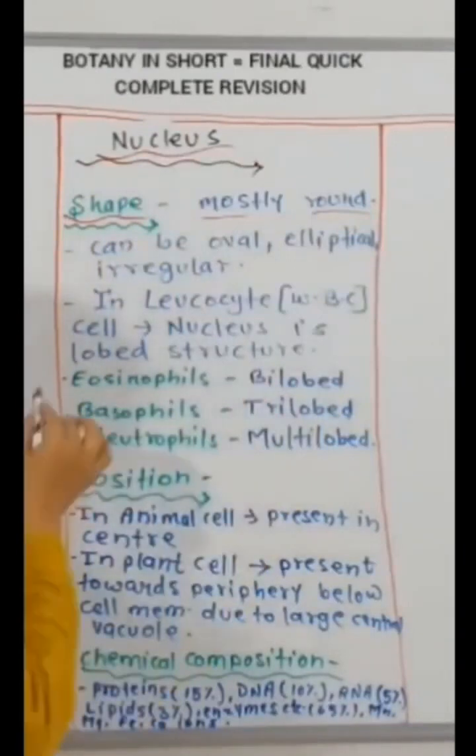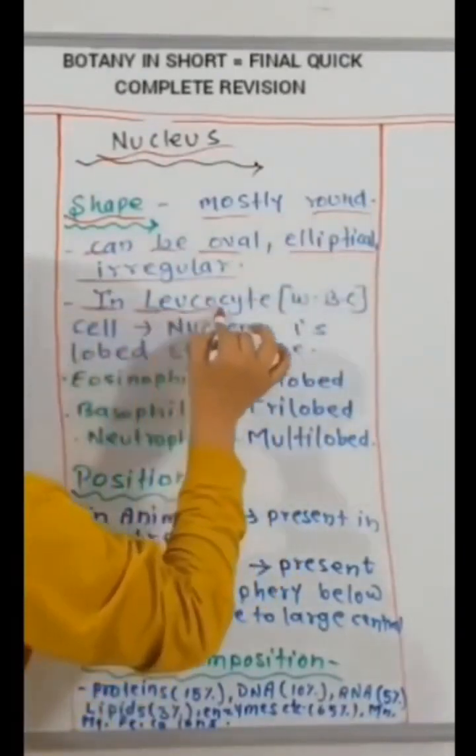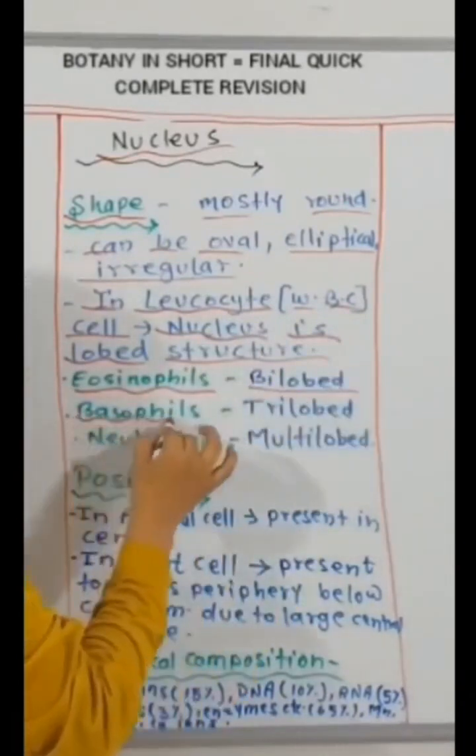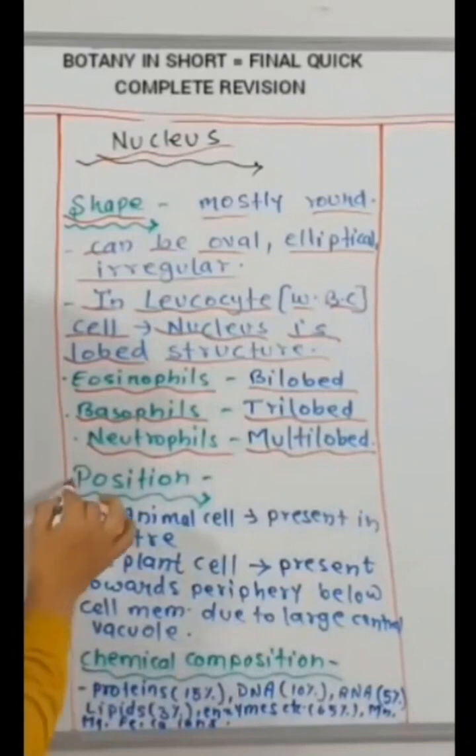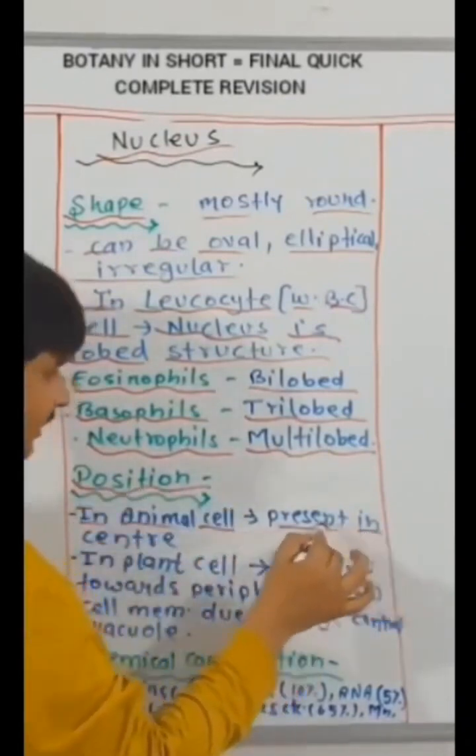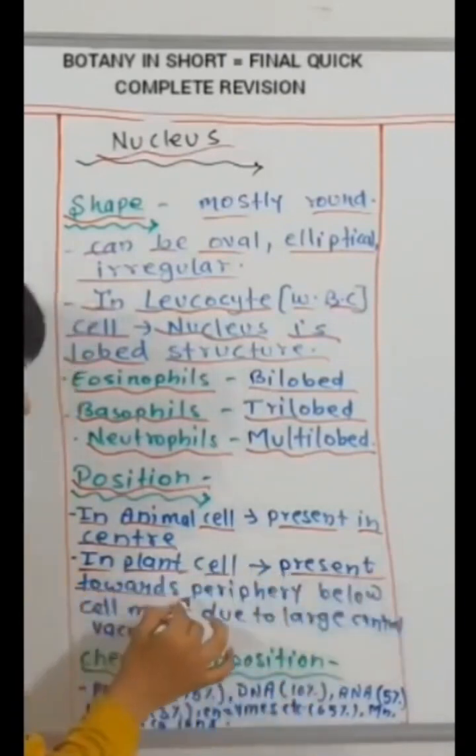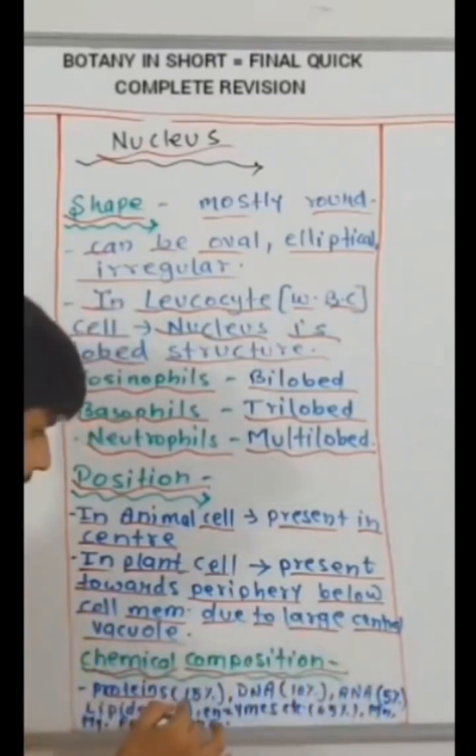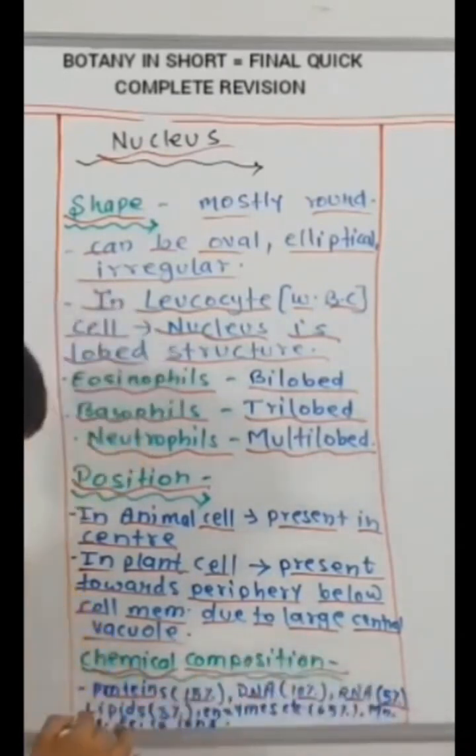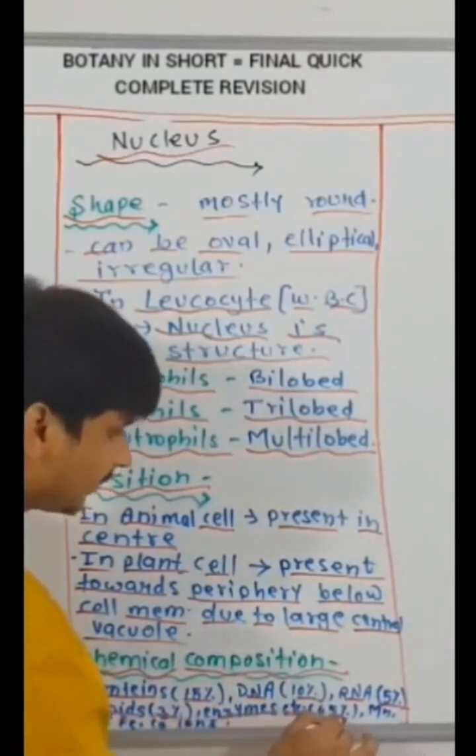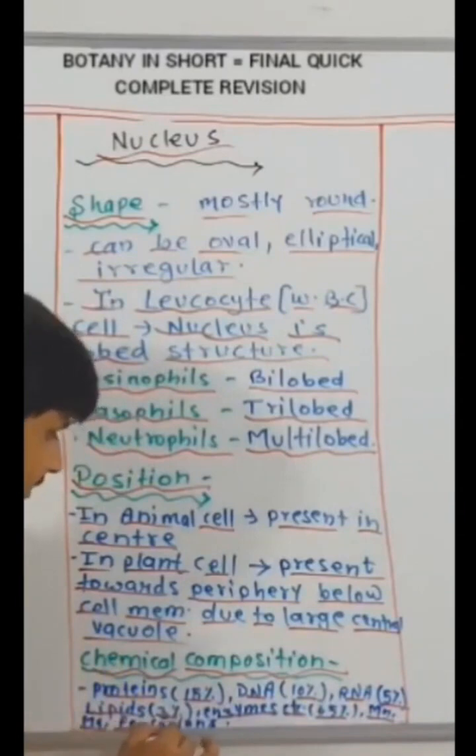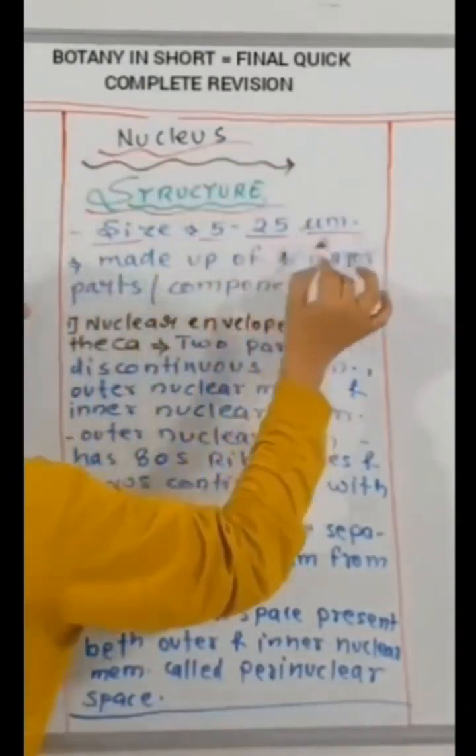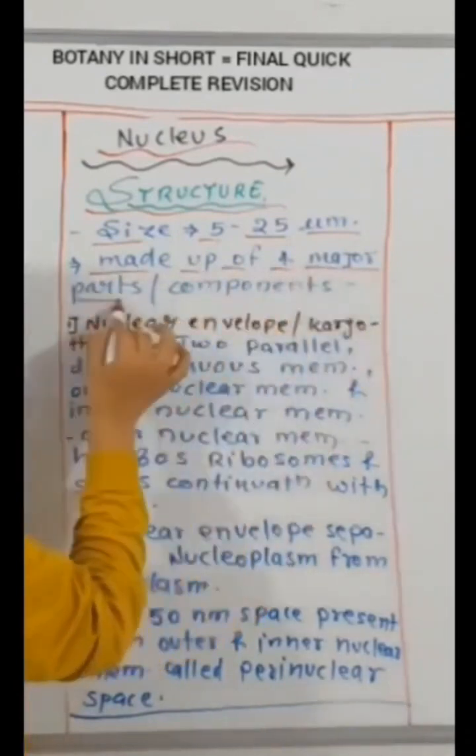Nucleus. Shape, mostly round, can be oval, elliptical, irregular. In leukocyte WBC cell, nucleus is lobed structure. Eosinophils, bilobed. Basophils, trilobed. Neutrophils, multilobed. Position, in animal cell, present in center. In plant cell, present towards periphery, below cell membrane due to large central vacuole. Chemical composition: protein 15%, DNA 10%, RNA 5%, lipids 3%, enzymes etc. Water 65%, magnesium, iron, calcium, ions also present. Nucleus, structure, size 5 to 25 micrometer, made up of four major parts, components.